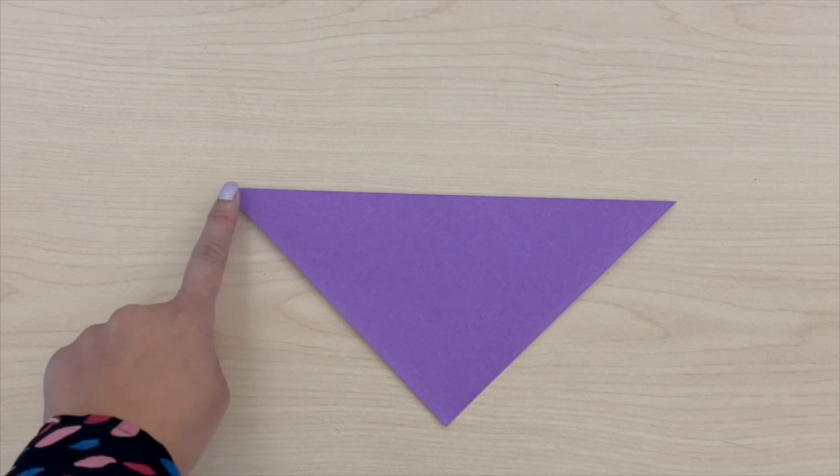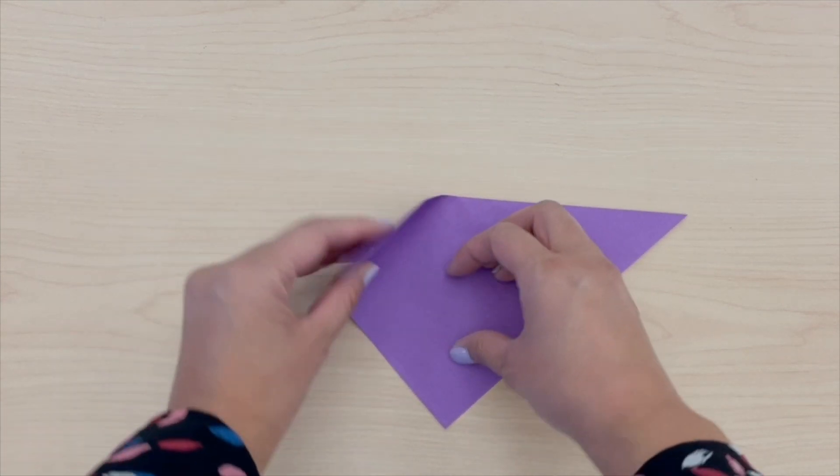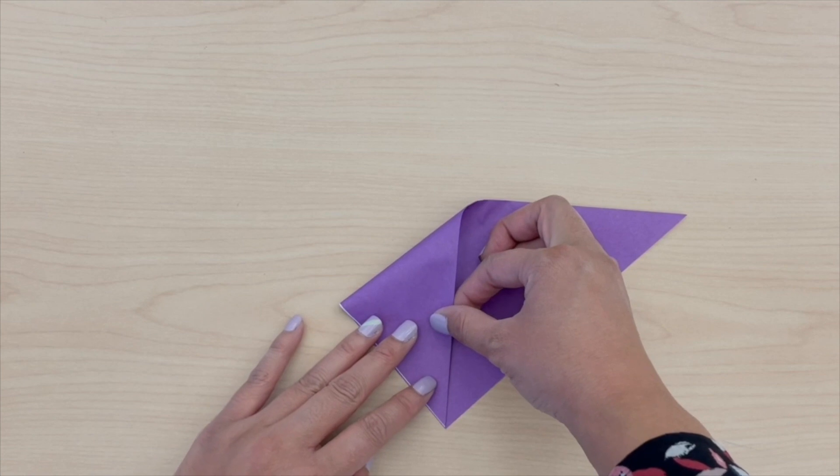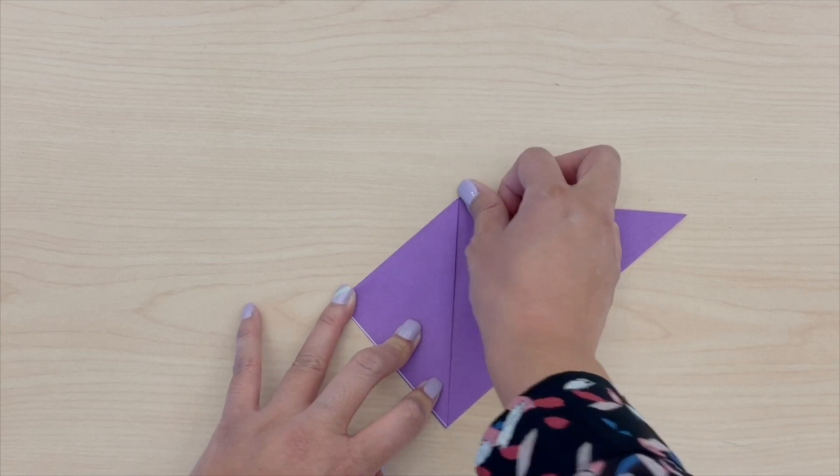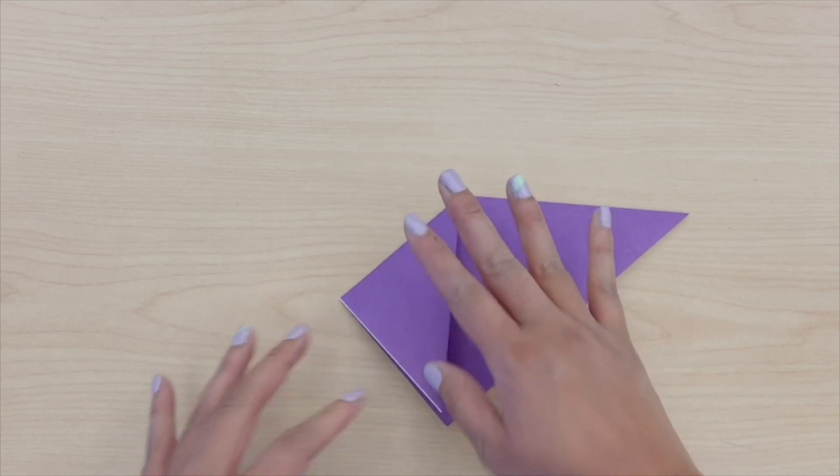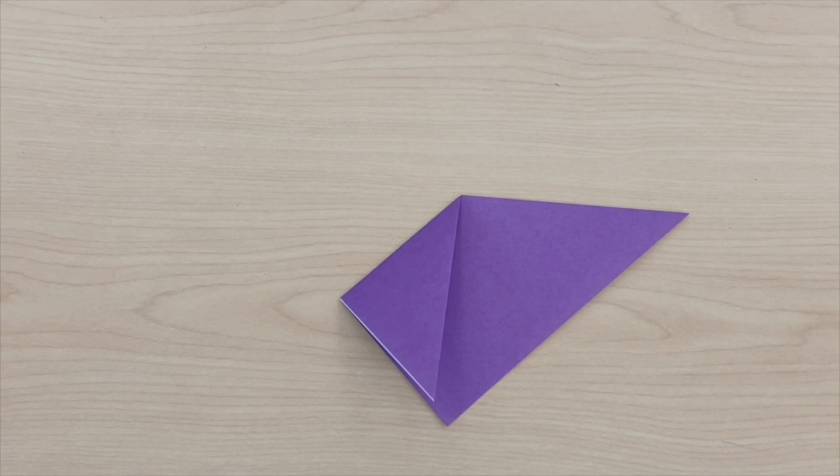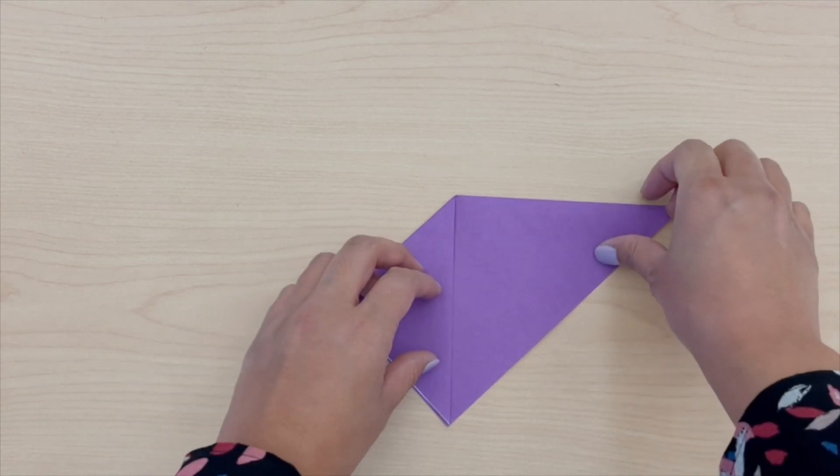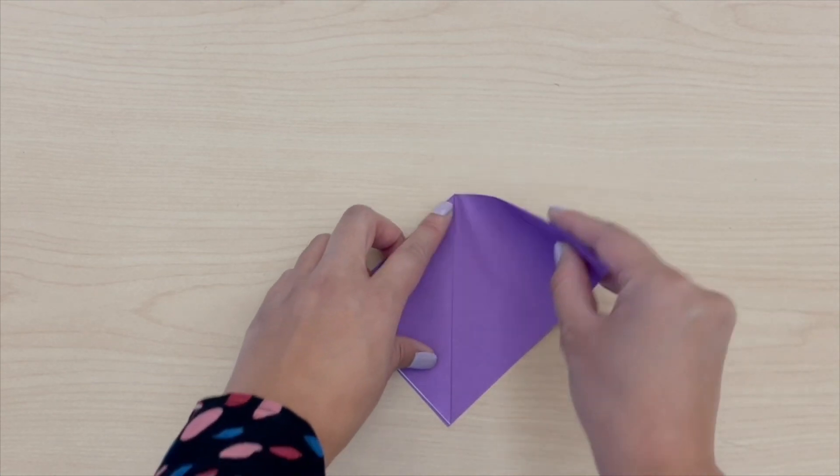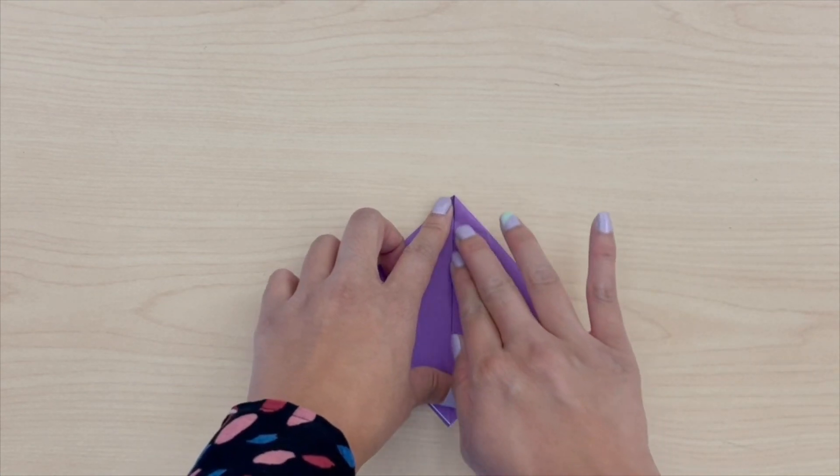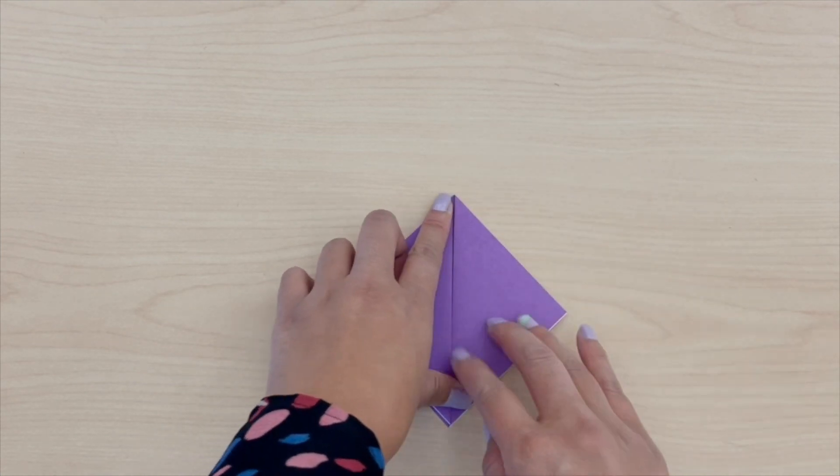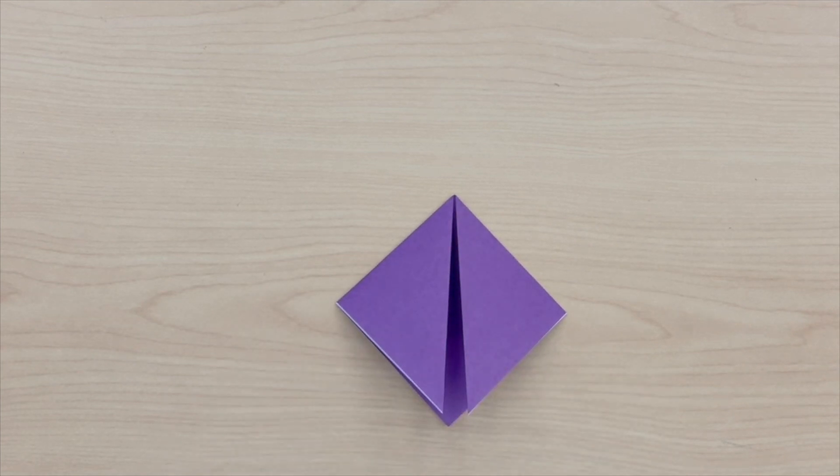Now you are going to take this point and fold it to the bottom. And then you will do the same to the opposite side. You're going to take that point and fold it to the bottom. So now you will end up with a small diamond.